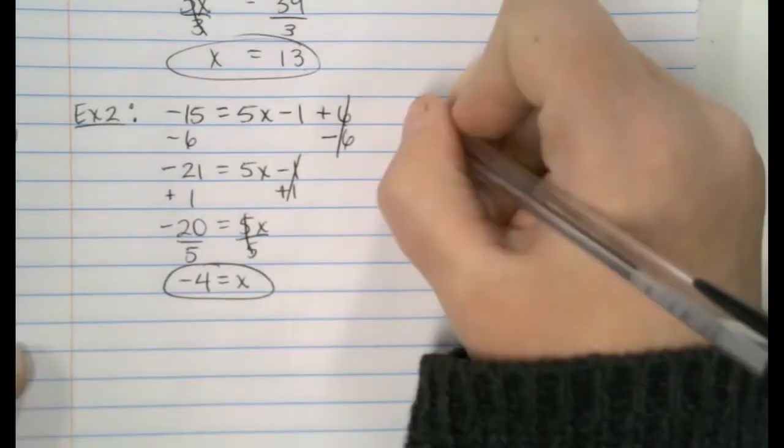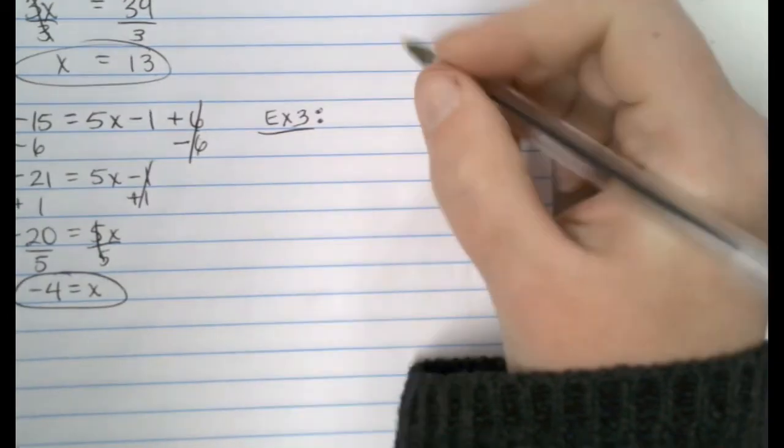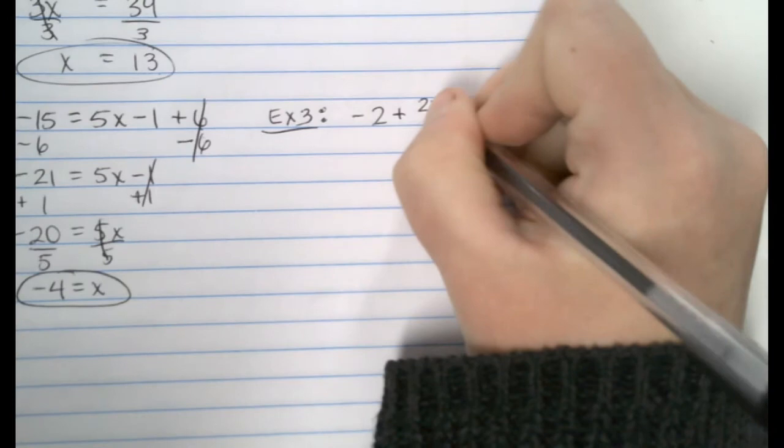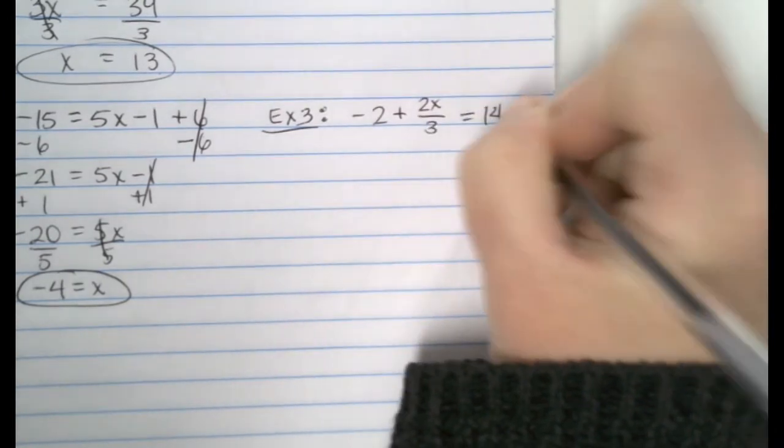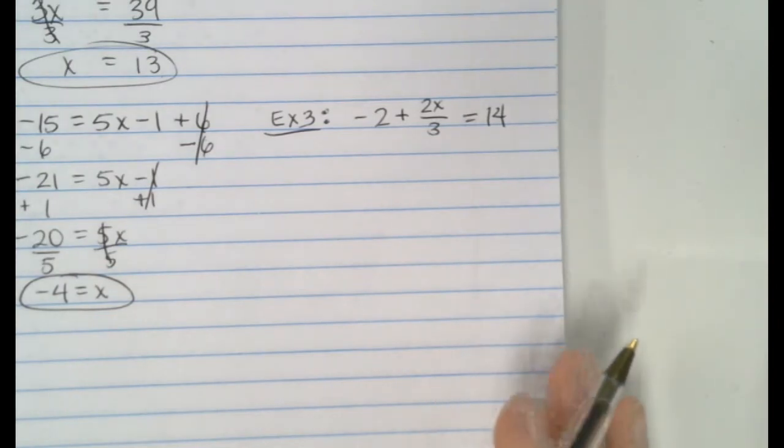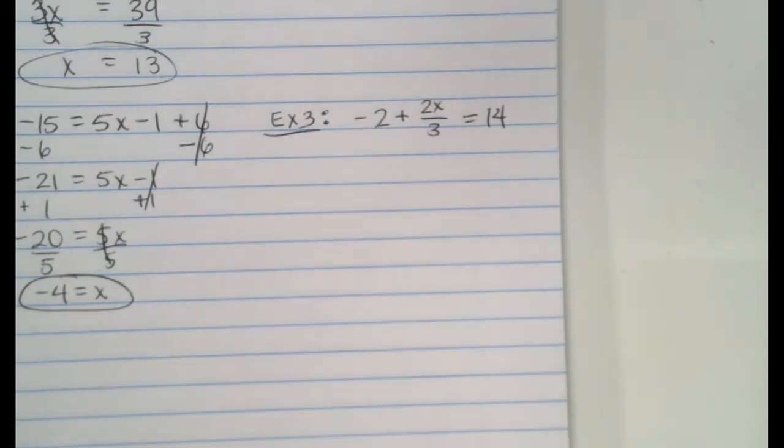Do y'all want to try one? Yes. This one's going to look even different, but I think you will be able to know what to do. So, this equation is going to be negative 2 plus 2x over 3 equals 14. So, we haven't done one like this, but I want to see if you guys know what to do. I think you probably do. Take it one small step at a time. I'll show you when we get it done.